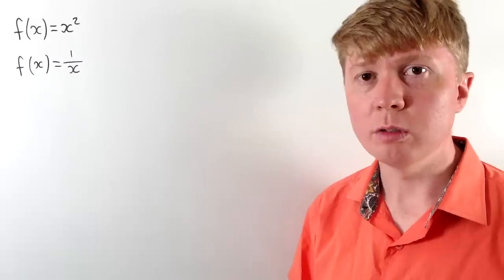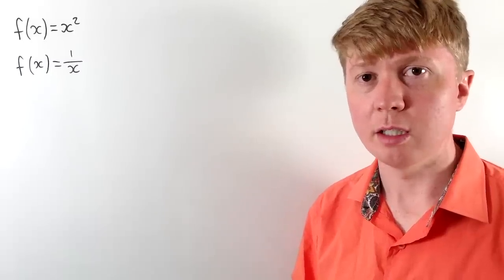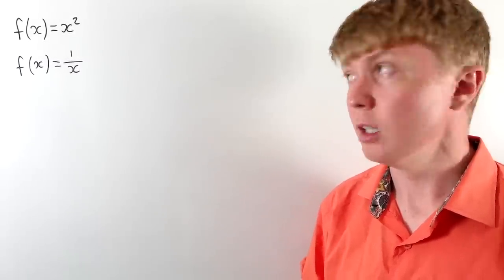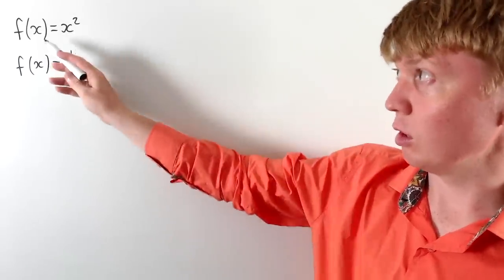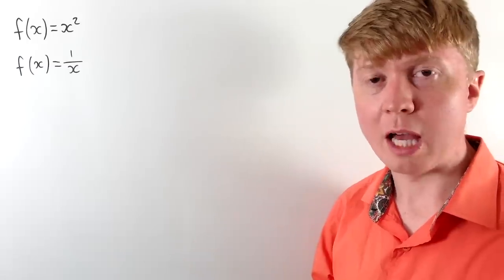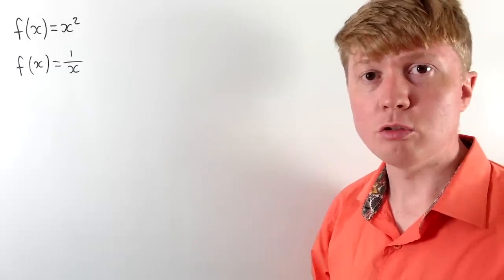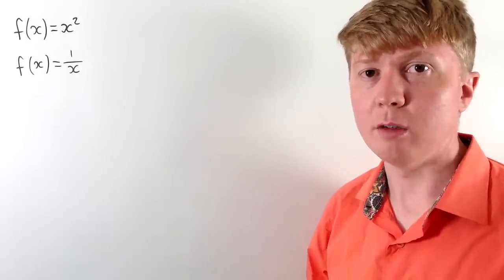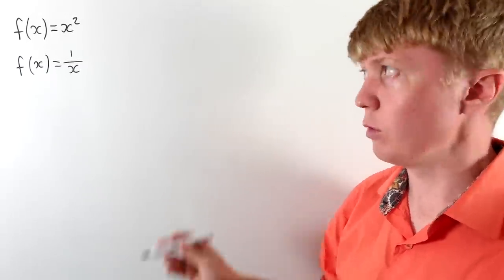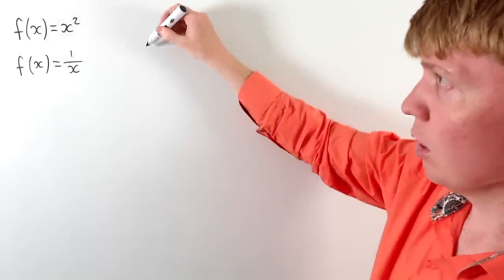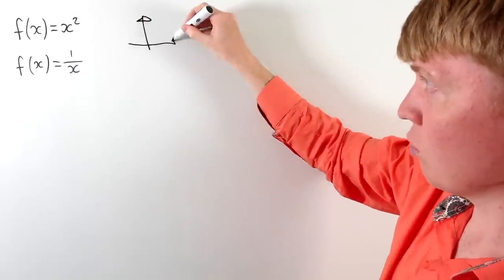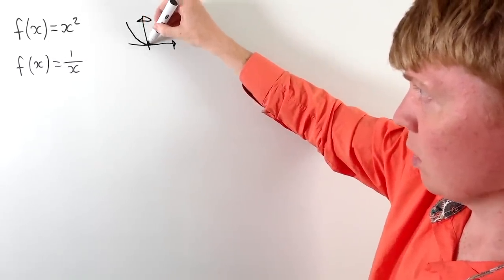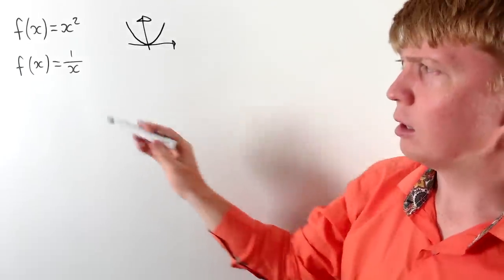The most simple way of understanding a continuous function at an intuitive level: if your function is x squared, you could draw the graph of your function without lifting your pen off the page. For x squared, you can see we can just draw this without having to lift the pen off the board.